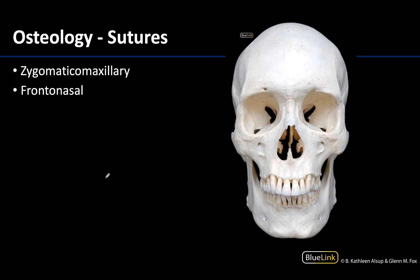Last view is a full anterior view of the skull. Here is that large frontal bone forming the bulk of the forehead region. You have the two zygomatic bones, or your cheekbones. These two small bones forming the bridge of the nose are your nasal bones. And these large bones that house your maxillary or upper teeth are going to be your maxillary bones, or maxillae. Where the maxilla meets the zygomatic is going to be the zygomaticomaxillary suture — you'll have one on each side. And where the frontal bone meets the paired nasal bones, you will have the frontonasal suture.